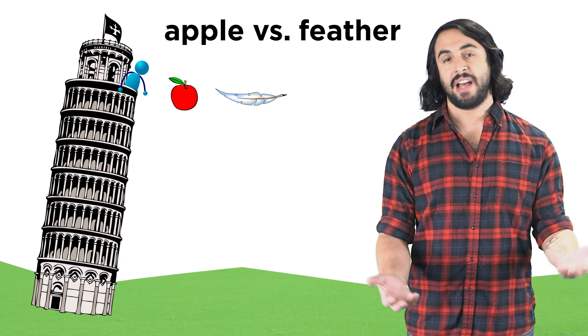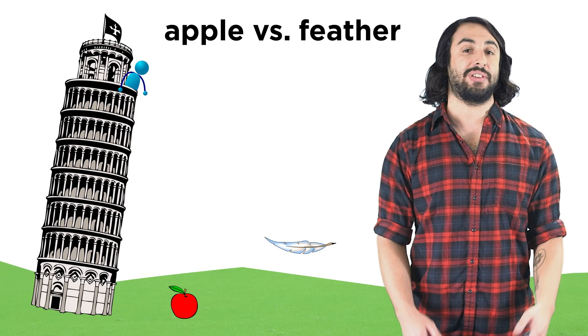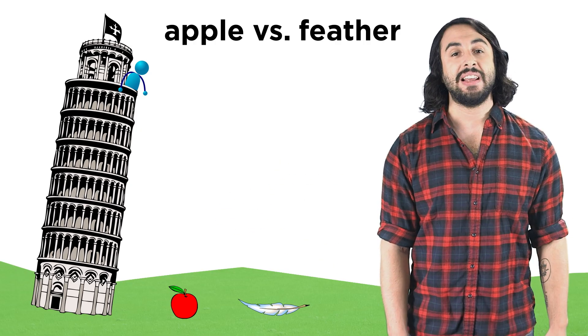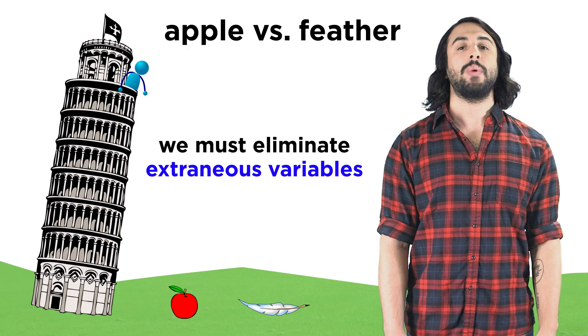We might choose to drop an apple and a feather, and the result would seem to support our hypothesis. But if we are clever, we will realize that we need to eliminate all the extraneous variables.